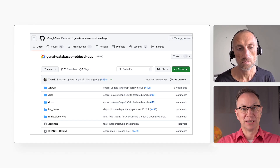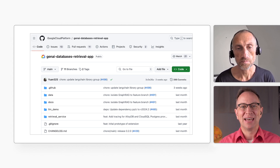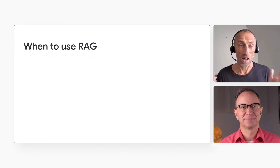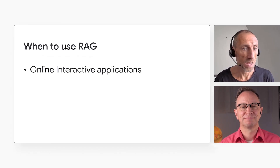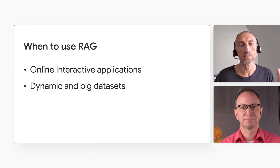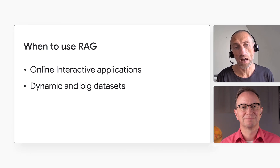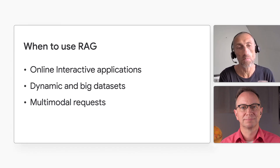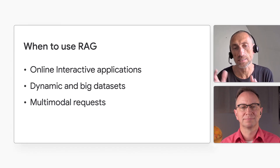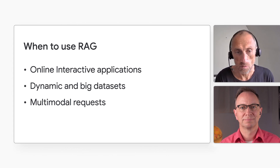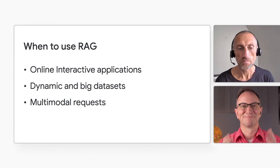I will add links to the codelabs and the repo in the video description below. So Gleb, when would you use RAG? RAG is fast, so it is good for interactive applications where a user is waiting for a response. It is good for a bigger, changing dataset, like the dataset of flights. Finally, RAG is good for multimodal requests where the input can be a mix of text, images, video, etc. LLM vectors work well for images as well, which means vector search works well, which means RAG works well.